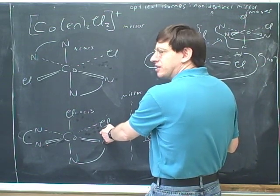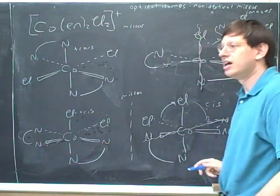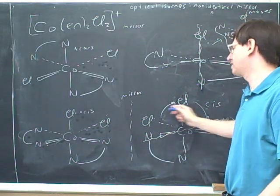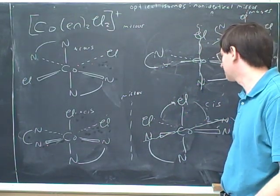Optical isomers. Optical isomers. These are optical isomers. They're both cis, by the way, right? Something's optical isomer is always the same type of geometrical isomer as it was. They're both cis.